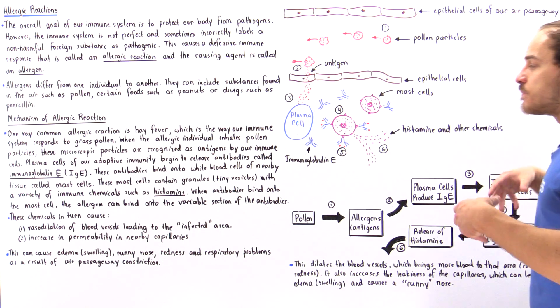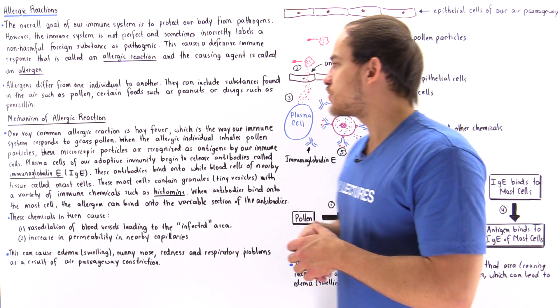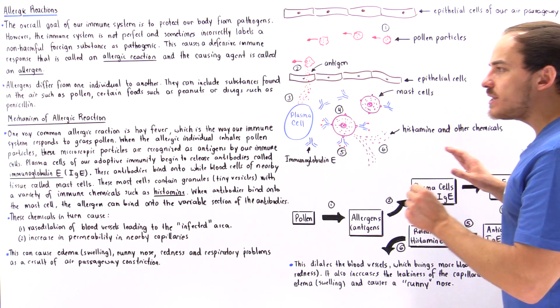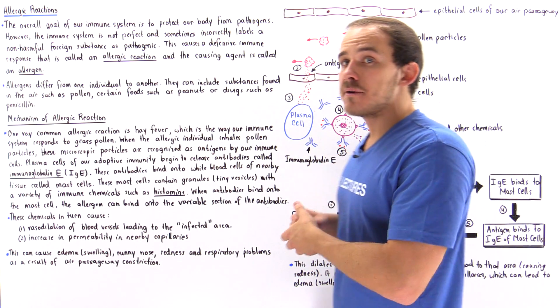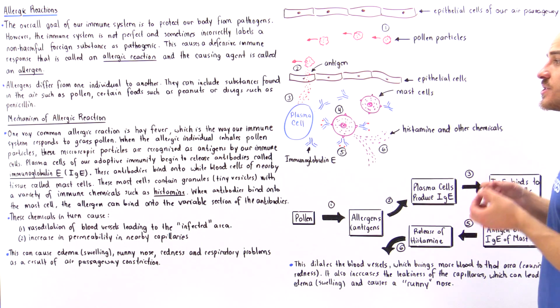More blood flows into our infected area as a result of this vasodilation process, the increase in diameter of those blood vessels. That brings more blood as well as more white blood cells. Now what histamine also does is it increases the permeability of the nearby capillaries to water and that makes those capillaries leaky.